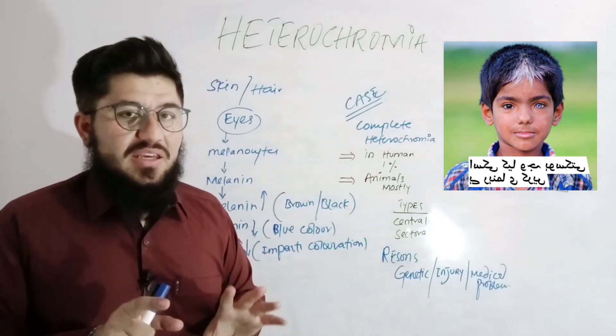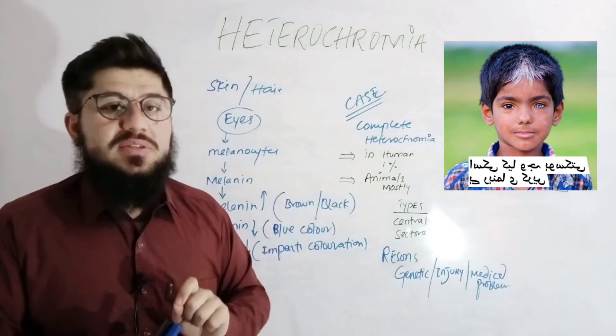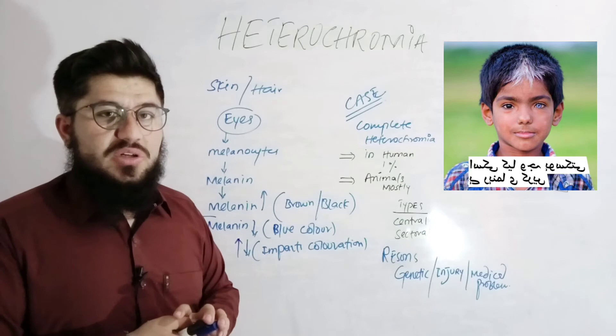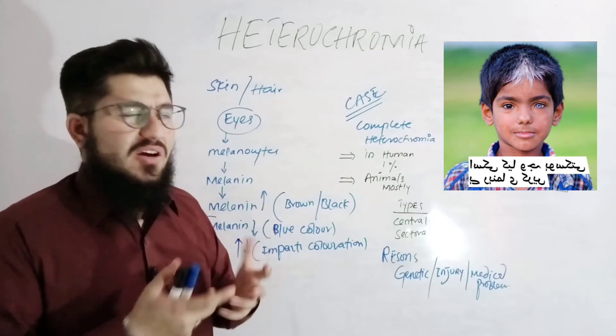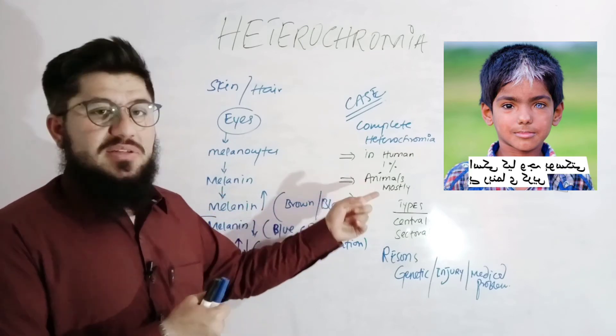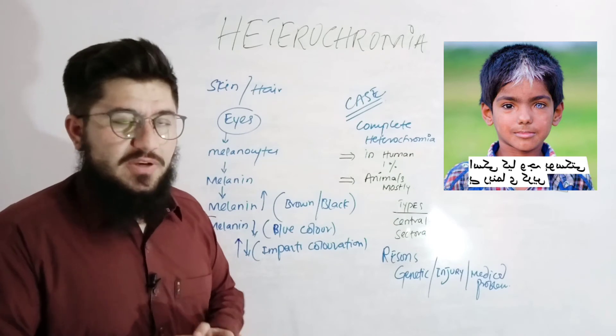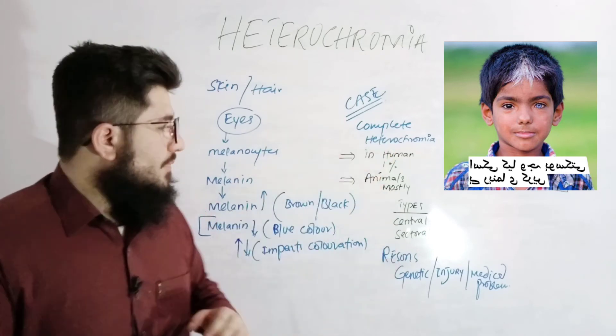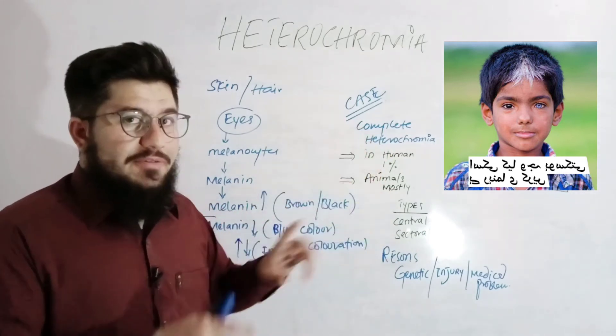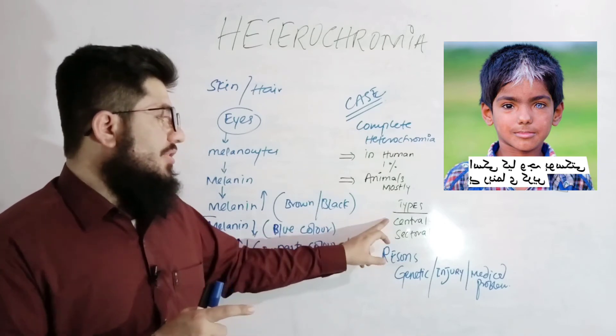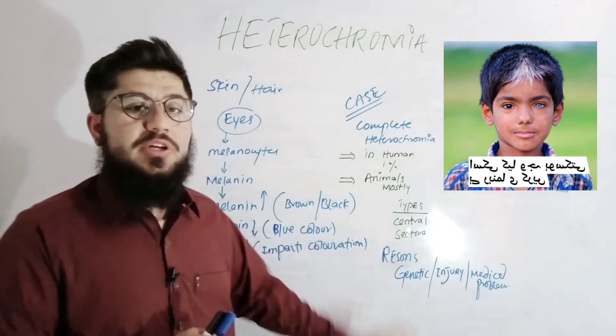This is very rare in humans. It is actually 1% and it is almost, one can say, a common type in animals. So most of the cases we can observe in animals of this type. And along with that, we have two other cases: central heterochromia and sectoral heterochromia.